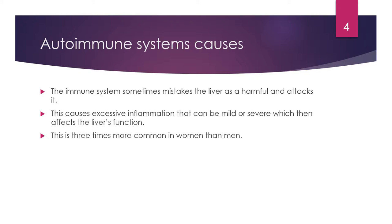Autoimmune system causes: autoimmune hepatitis is a disease that occurs in your body and makes antibodies against your liver tissues. The immune system often mistakes the liver as harmful and attacks it, causing the liver to become inflamed. This can be mild or severe and will affect how your liver functions. Autoimmune hepatitis is three times more common in women than men.